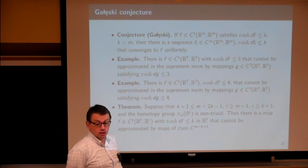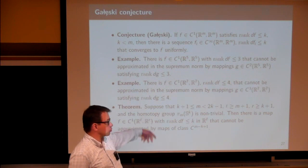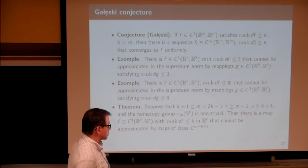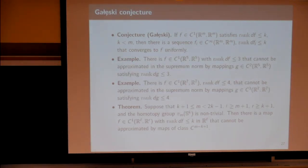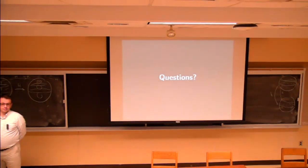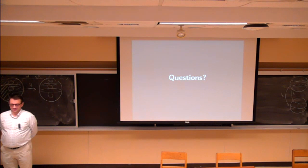Audience question: what about pi_7(S⁴)? You have to check whether the homotopy group is non-trivial and whether those conditions on m and k are satisfied. If you have a rational invariant that's non-trivial, then the proof using differential forms works. In any other case we cannot prove it.